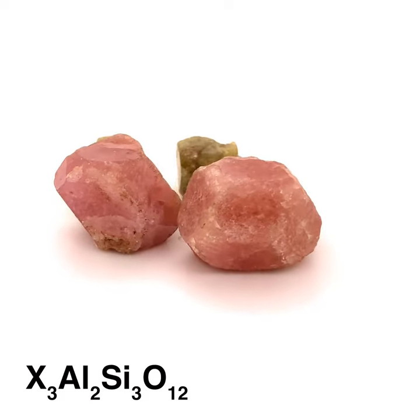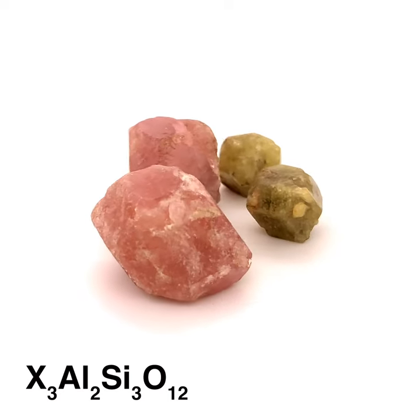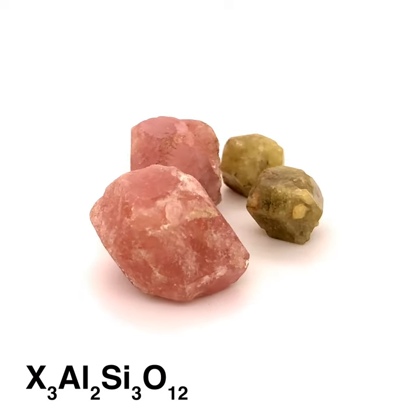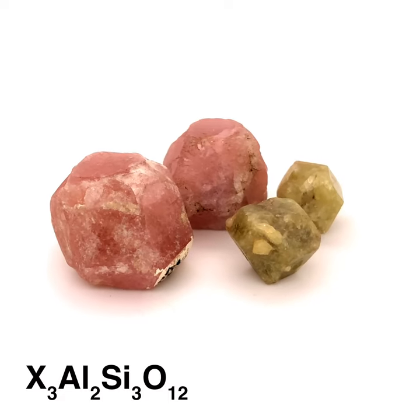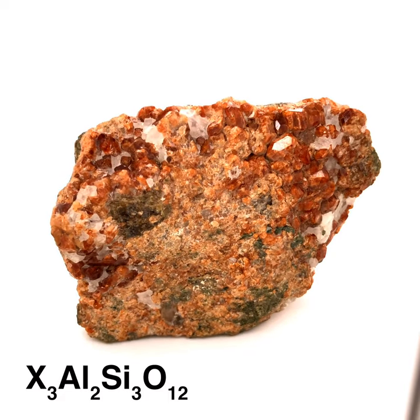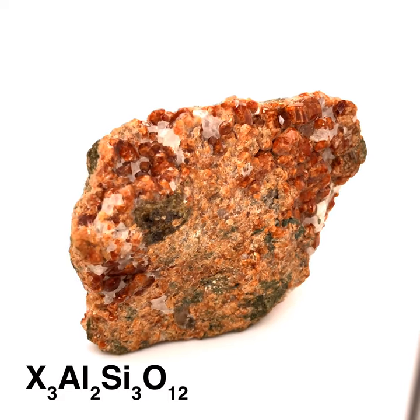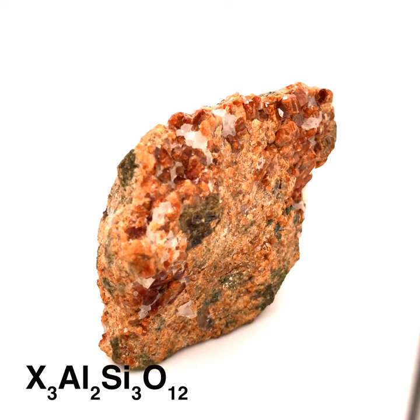When it's magnesium, we call that species pyrope, which is dark red to purple. Iron is the red almandine. Calcium makes the pinks and greens in grossular garnet. Manganese tends to make orange spessartine garnets, like this example.